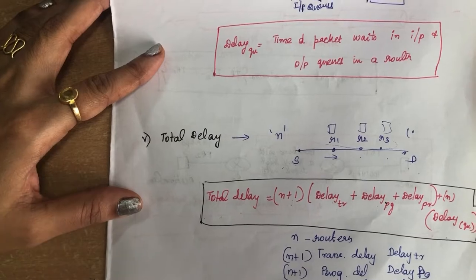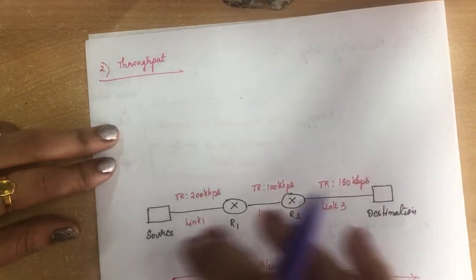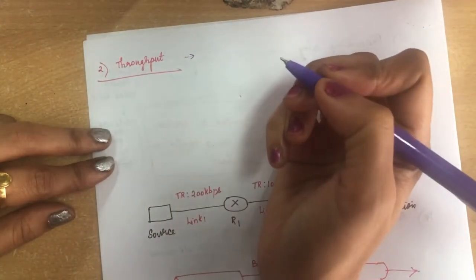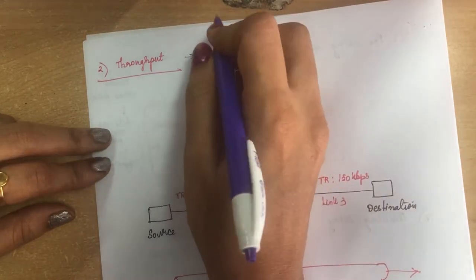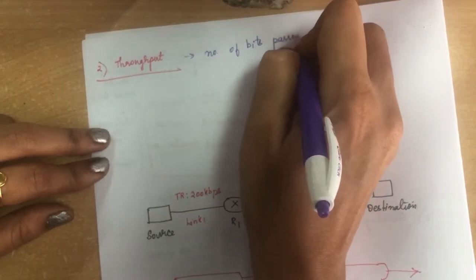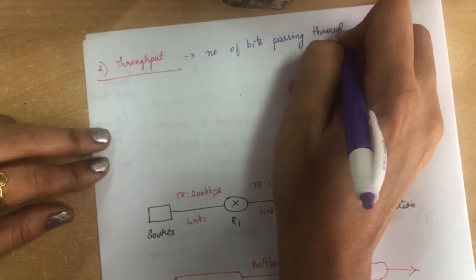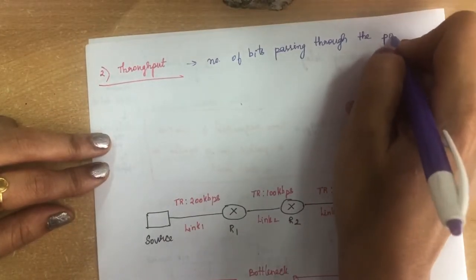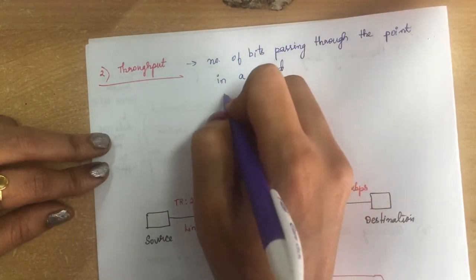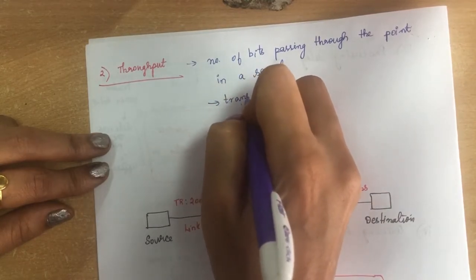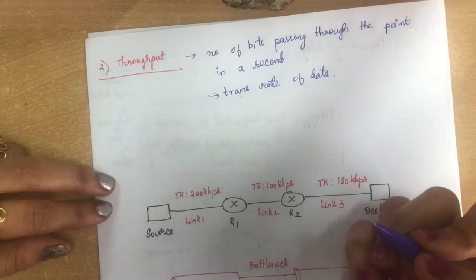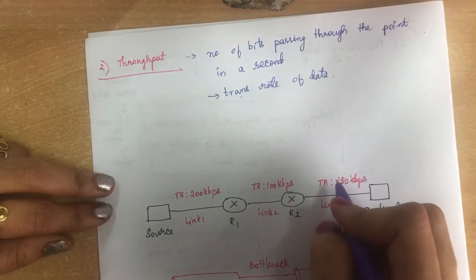Next, network performance is measured by throughput. Throughput is the number of bits passing through a point in a second, which is also called the transmission rate of data.